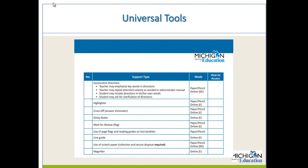Continuing with universal tools, a second page shows other frequently used supports: highlighter, cross-off tool, sticky notes, mark for review, page flags and reading guides on test booklets, a line guide, scratch paper (collection and secure disposal required), and a magnifier. There is a mode column indicating whether the support can be used via paper-pencil or online. The magnifier is listed only as an online universal tool because it is an embedded tool within the online delivery engine.